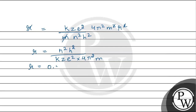If we substitute all values — Planck's constant h, Coulomb's constant k = 9×10⁹, charge on electron e, value of π, and mass of electron m — then the radius formula becomes: r = 0.529 · n² / Z Angstrom. Therefore, radius is directly proportional to n square. So the first case has been proved.